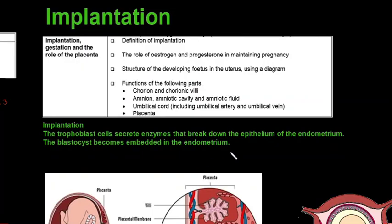For implantation, you need to know: the definition of implantation, the role of estrogen and progesterone in maintaining pregnancy, the structure of the developing fetus in the uterus using a diagram, and the functions of the chorion, chorionic villi, amniotic cavity and amniotic fluid, umbilical cord, and placenta. The definition of implantation is when the trophoblast cells secrete enzymes that break down the epithelium of the endometrium, and the blastocyst becomes embedded in the endometrium.